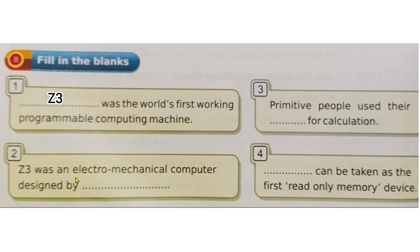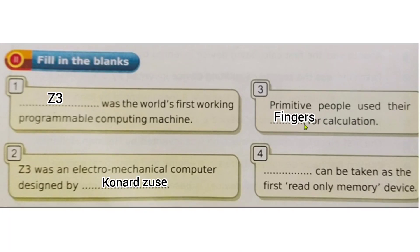Fill in the blanks. Question two: Z3 was an electromechanical computer designed by Konrad Zuse — spelled K-O-N-R-A-D Z-U-S-E. Question three: prehistoric people used their fingers for calculation. The answer is fingers.